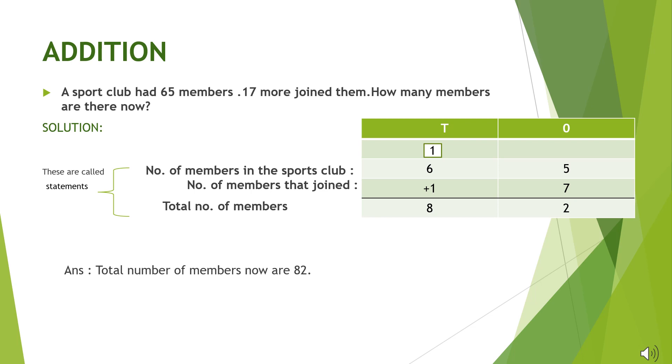5 plus 7 gives 12. So we will write 2 in the ones column and carry over 1 to the tens column. Moving to the tens column, 6 plus 1 plus 1 will give 8. So the total number of members now are 82. This will be the final answer.